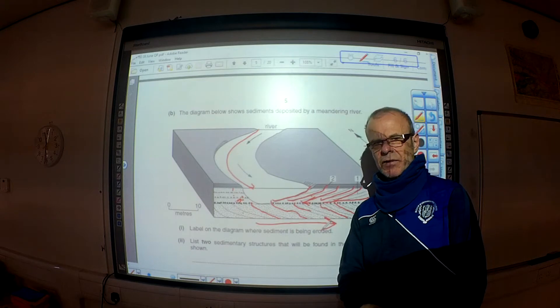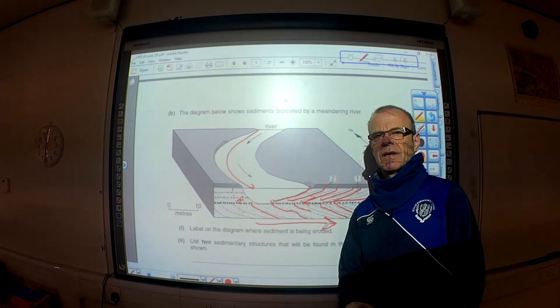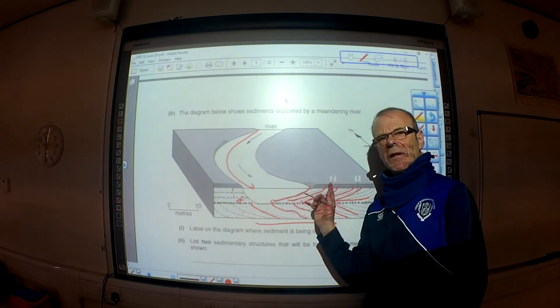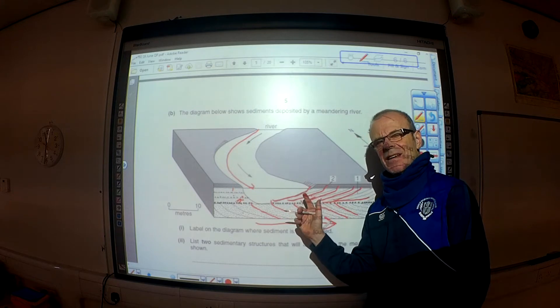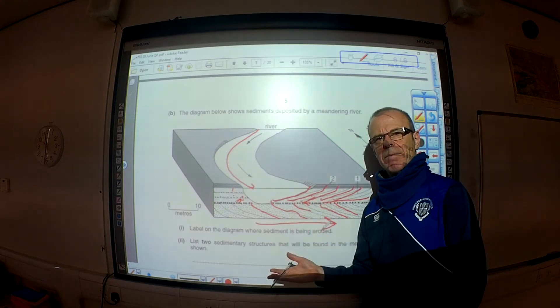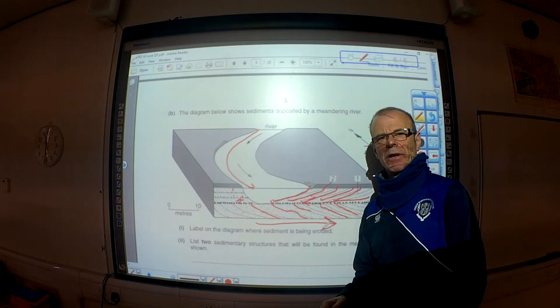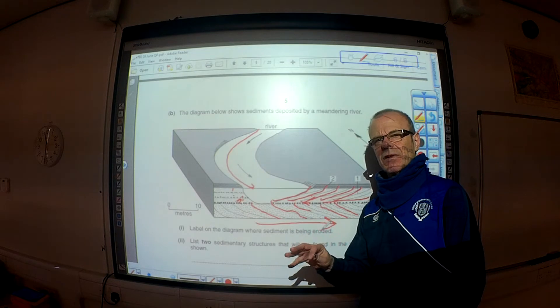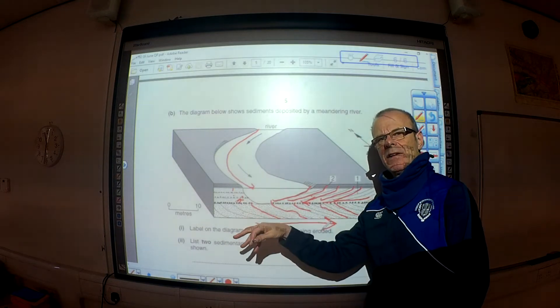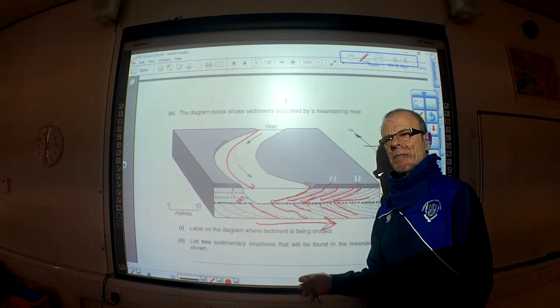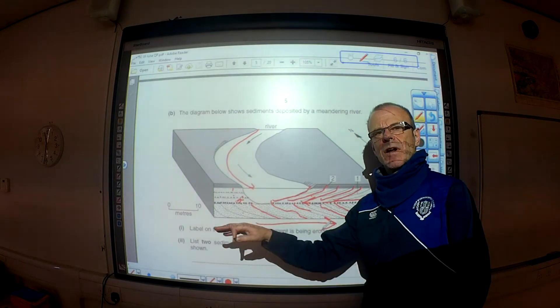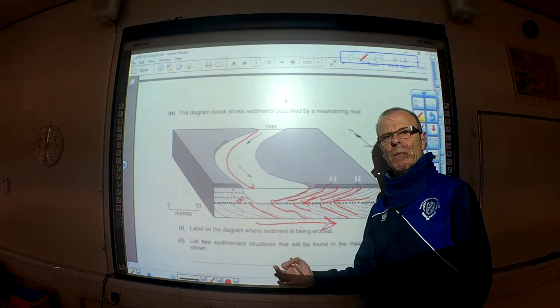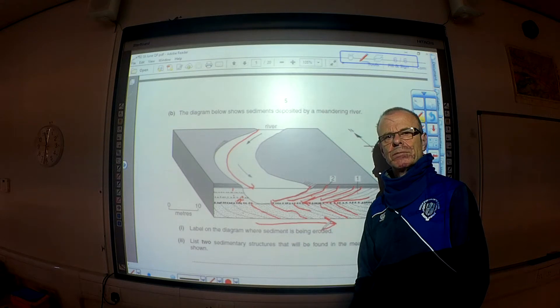One other thing to bear in mind, this could be part of a deltaic deposit and if it is, it will be part of a cyclothem and the cyclothem will typically have coal in it. There are your plant fossils but bear in mind that deltas are transitional environments between the land and the sea. And therefore from time to time you can have marine transgression over the top of the delta and with that transgression will come marine species of fossils. Let's move on.